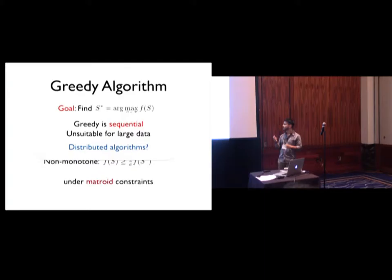So these results are quite good, but there is a problem. Greedy is inherently sequential, which makes it probably unsuitable for a large data set, so that raises the question, can we parallelize these algorithms?